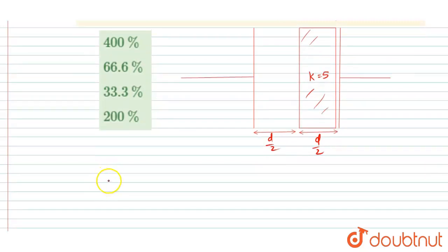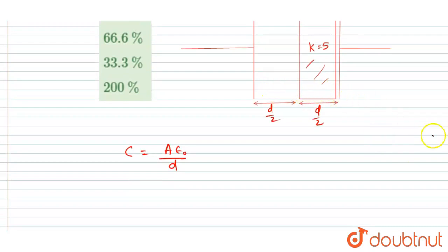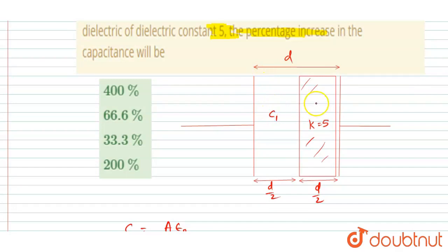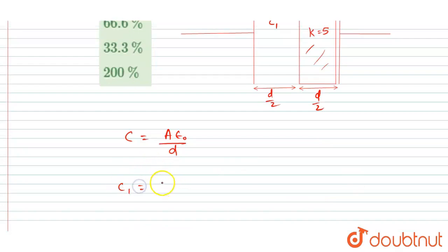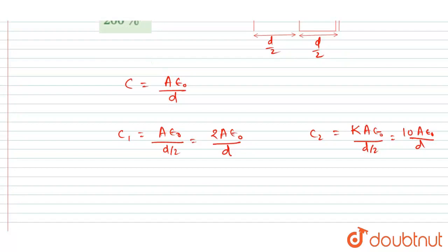Initially the capacitance C was Aε₀/d. Now there are two capacitors connected in series — C1 and C2. C1 equals Aε₀ divided by d/2, which gives 2Aε₀/d. C2 equals kAε₀ divided by d/2; since k is 5, this gives 10Aε₀/d.